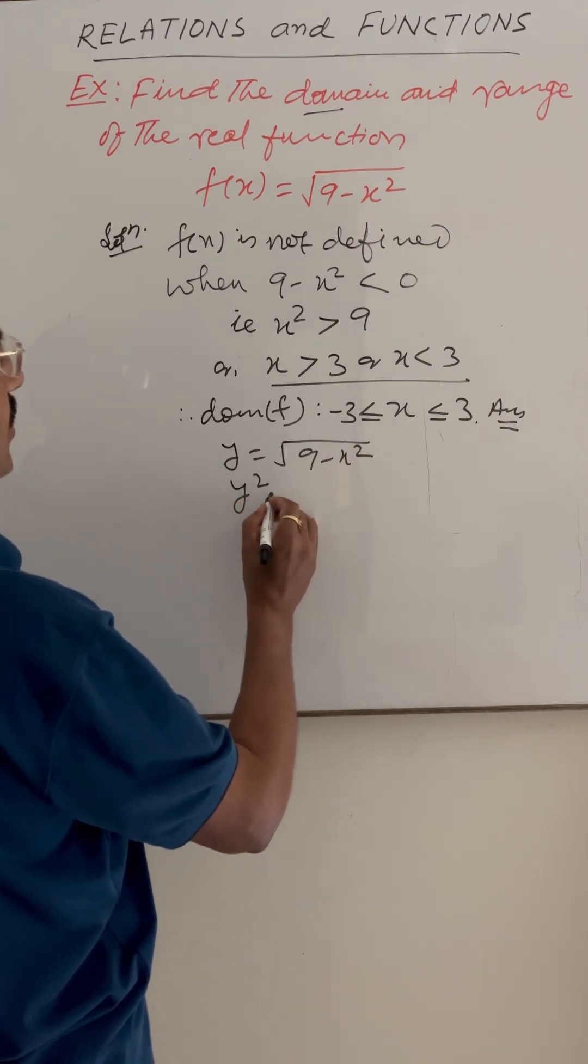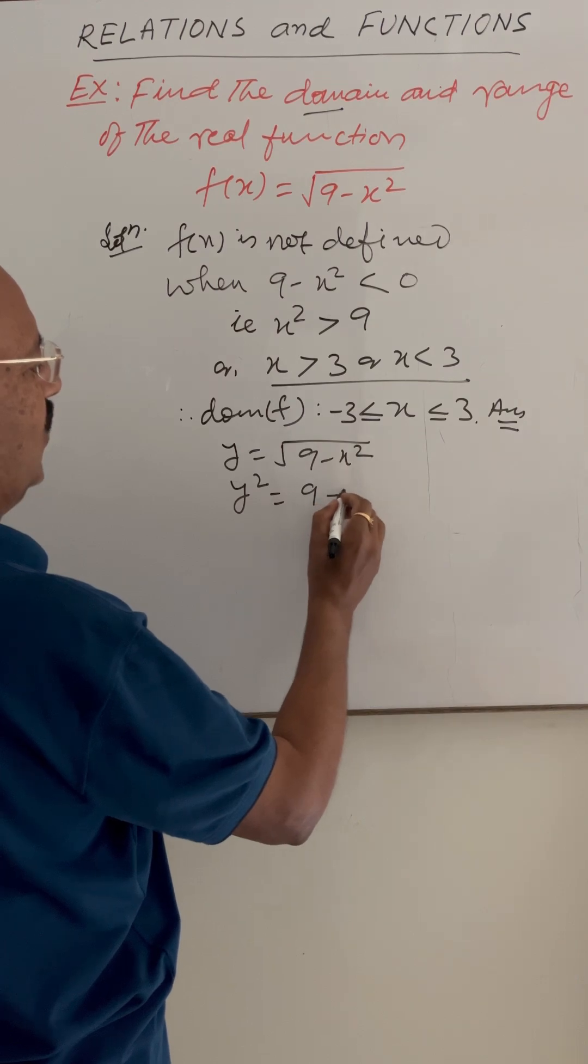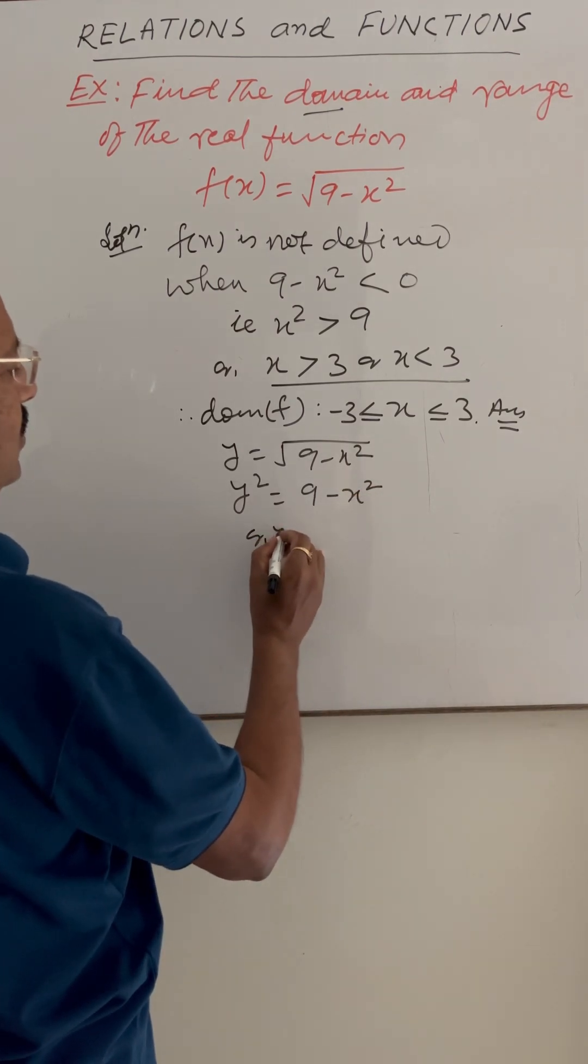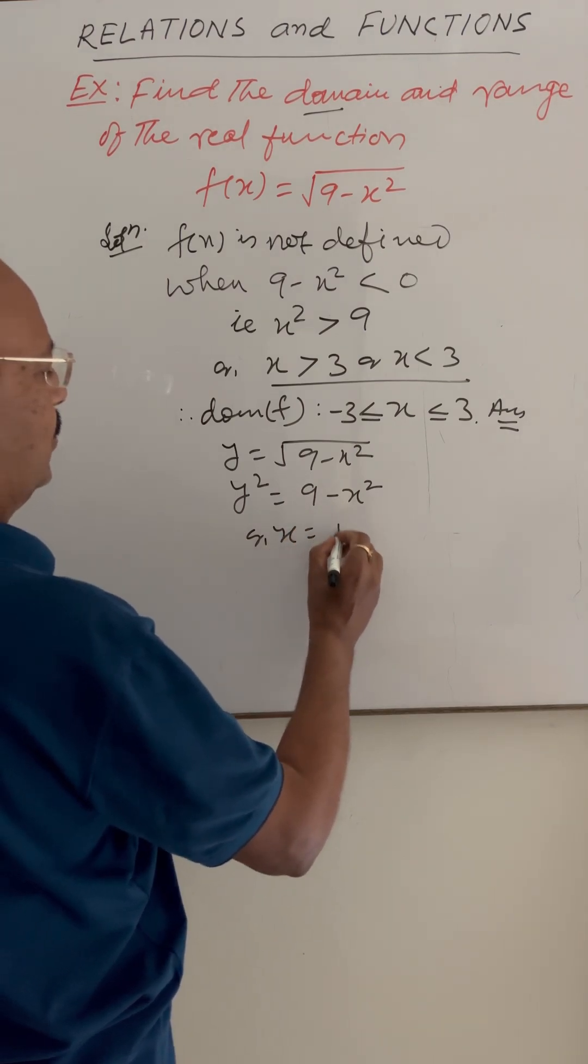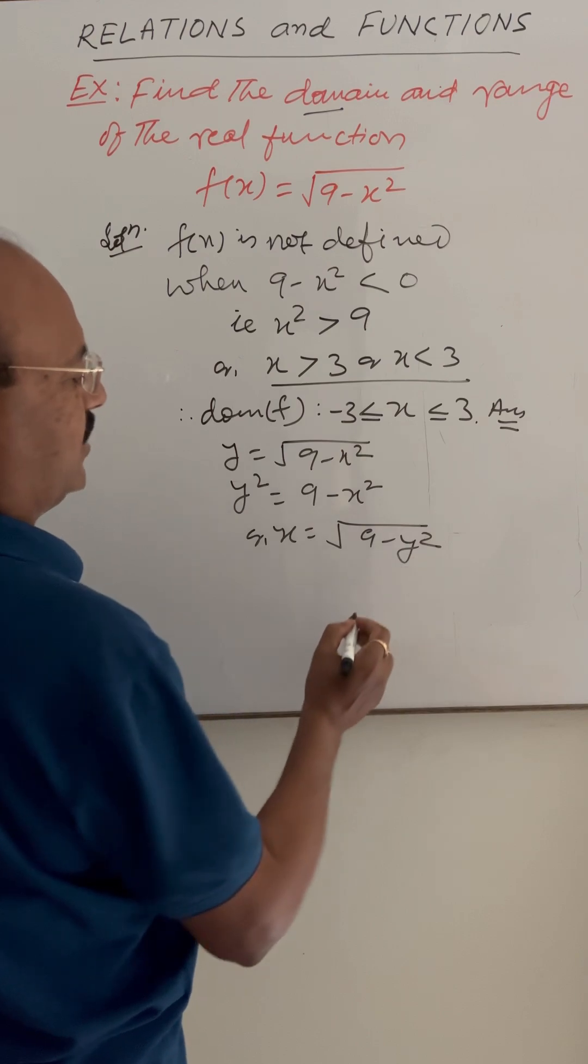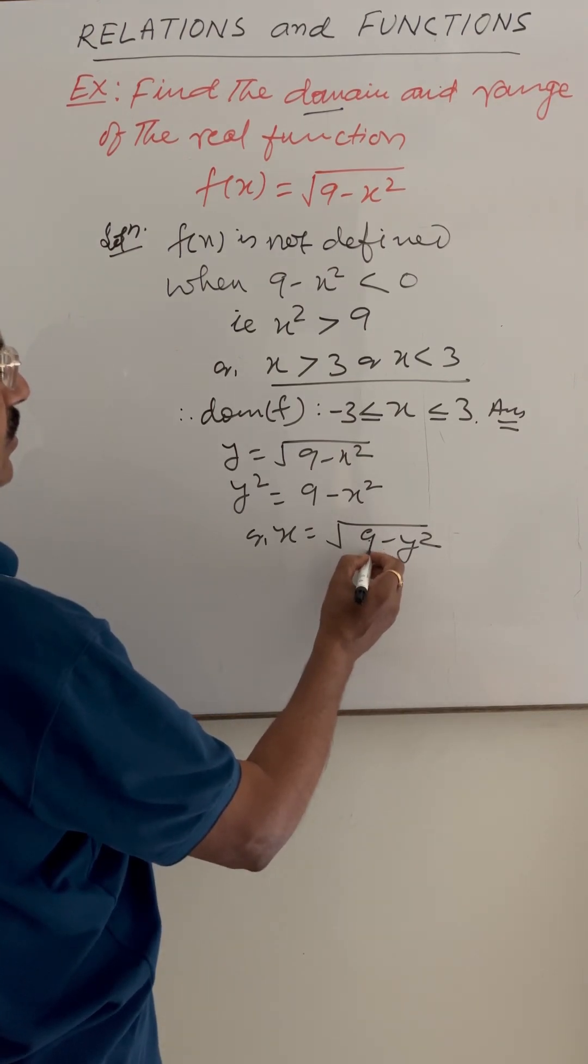Squaring both sides, y² is equal to 9 minus x², or x is equal to the square root of 9 minus y². This is also not defined.